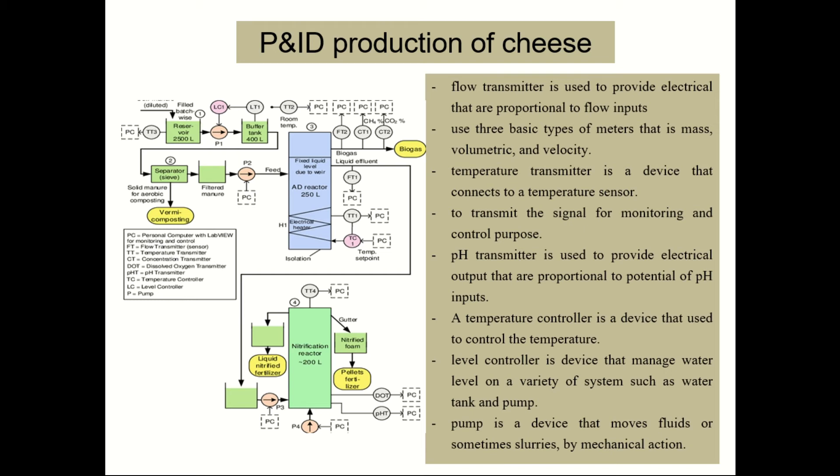A temperature controller is a device used to control the temperature. A level controller is a device that manages water level in a variety of systems such as water tanks and pumps. The function of a level controller is to regulate water flow and optimize system performance. Lastly, a pump is a device that moves fluid or sometimes slurries by mechanical action.